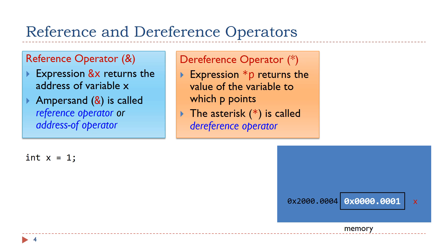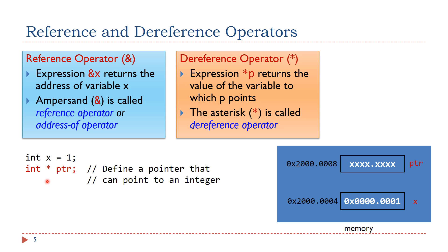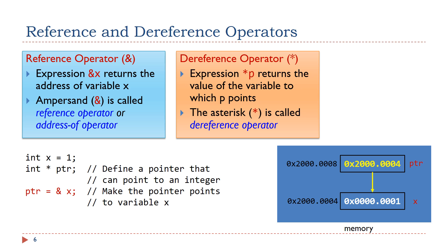Let me show you how the reference and dereference operators are used. Suppose we declare an integer variable x. Assume this integer variable is stored in memory address 0x2000004 in hex, and the variable x has an initial value of 1. Then we define a pointer variable named ptr. The pointer ptr can point to a memory location at which an integer is stored. Suppose the pointer ptr is stored at memory address 0x2000008 in hex. When we declare a pointer variable, its content is not initialized — the content of the pointer variable is not a valid memory location.